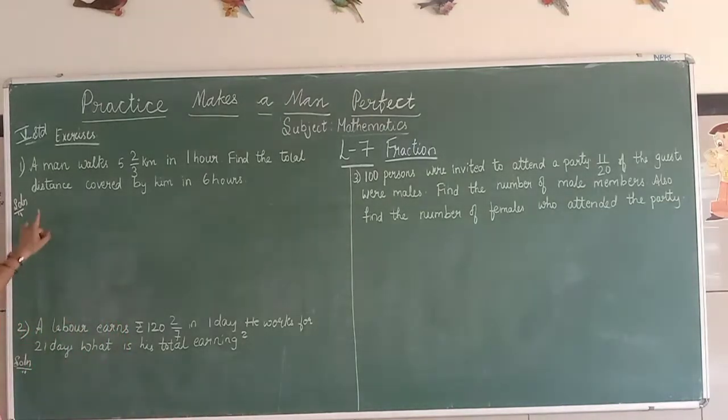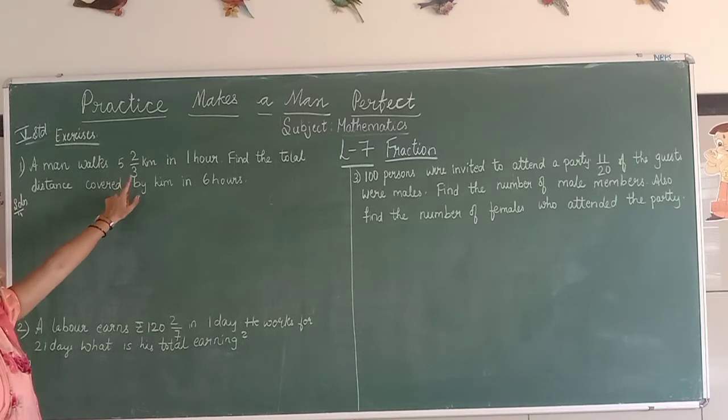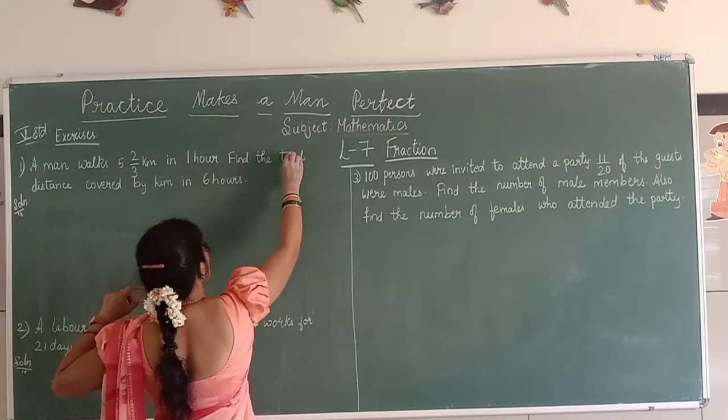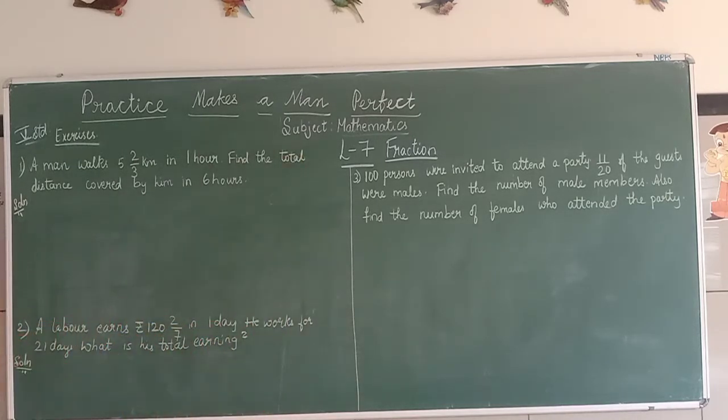Here's the first problem: A man walks 5 2/3 km in 1 hour. Find the total distance covered by him in 6 hours. What is the solution?